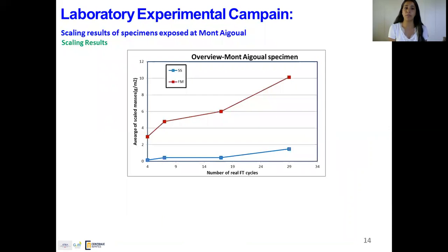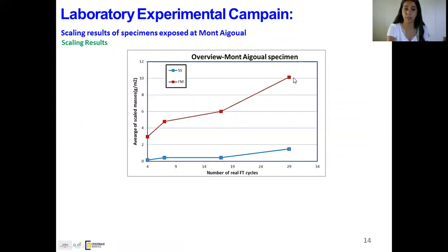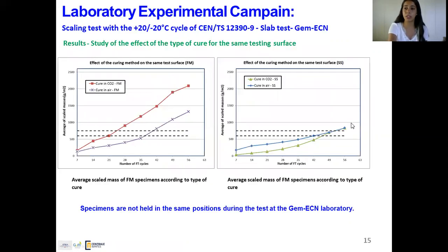Regarding the results: first, the scaling results of specimens placed at Mont-Égual in real exposure conditions. The mold bottom face scaled more than the sawn face. The average scaled mass after 29 freeze-thaw cycles of +5/-5°C reached 10 g/m² for the mold bottom face and barely 2 g/m² for the sawn face. This may be because the mold bottom face has a higher quantity of cement-based matrix able to scale compared to the sawn surface.